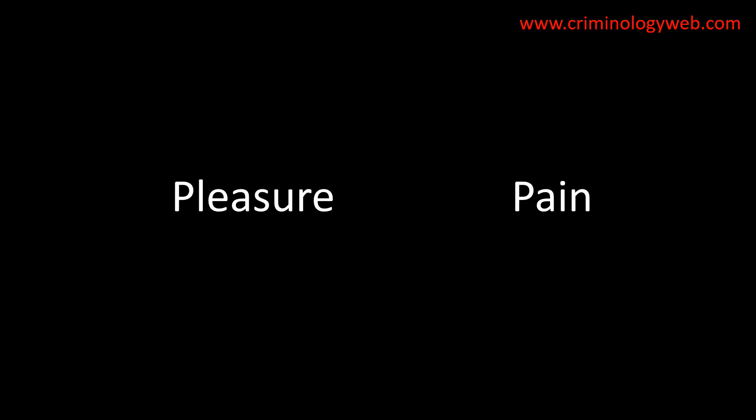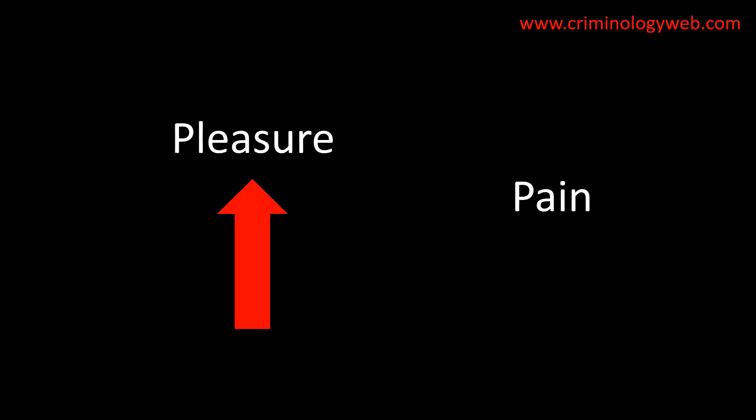Rational choice theory is based on what is called classical theory. I have other videos on classical theory and its proponents, like Beccaria and Bentham. In short, it is based on the idea that humans possess free will, so they freely decide whether or not to commit a crime. The main factors people consider are pleasure and pain — they try to maximize pleasure and minimize pain. Classical theory lost some of its popularity toward the end of the 19th century, and in much of the 20th century other theories were favored, particularly the positivist school, which focused on the motivation of offenders — for example, on how poverty or psychological factors led people to crime.